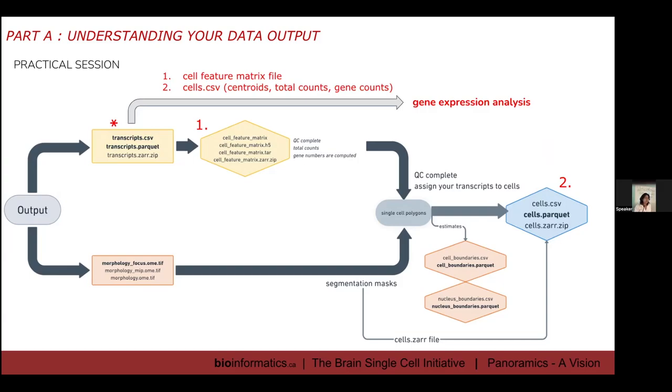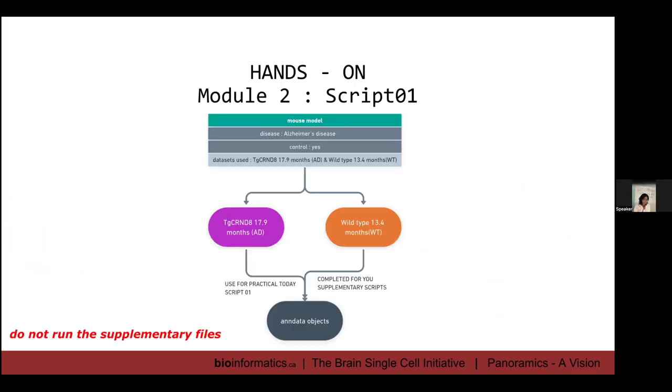We're going to start with the transcripts.csv or transcripts.parquet file, and you're going to derive your cell feature matrix file, your centroid, total counts, and gene counts. You're going to form your AnnData object from there. The reason for doing that is I would like you to take a look at what the transcripts files are about and how they are manipulated, so you have a better understanding.